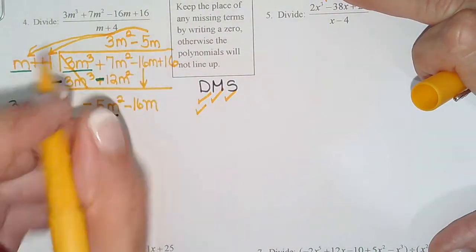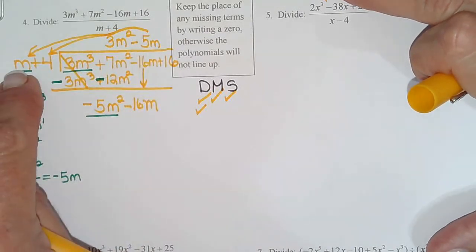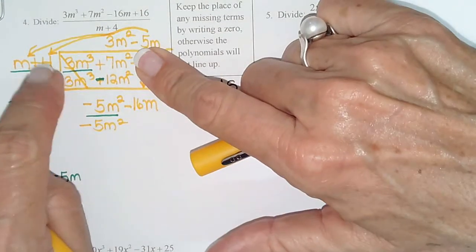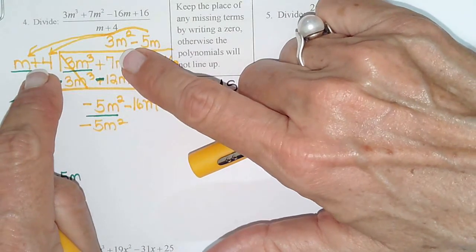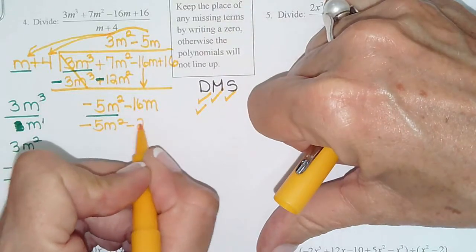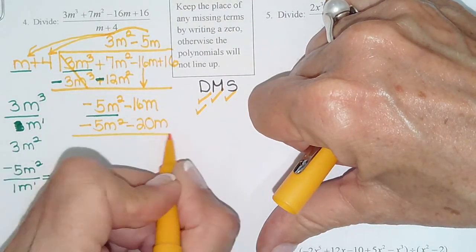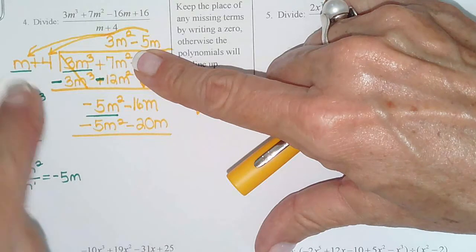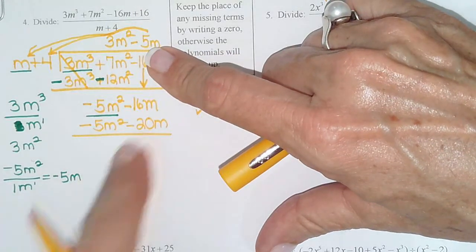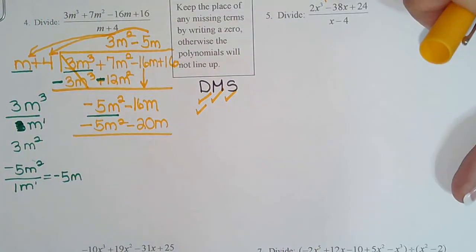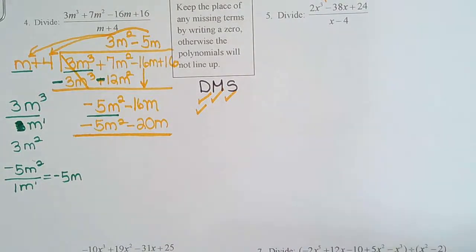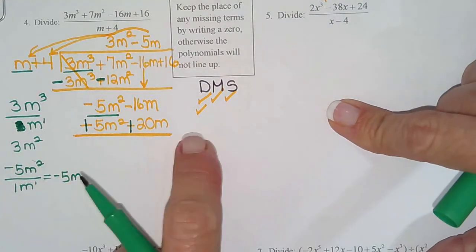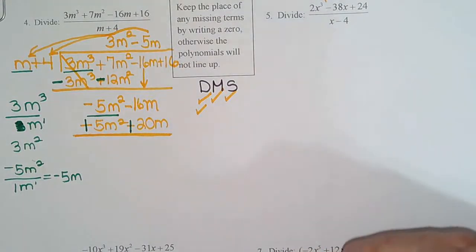Now we need to extend these over here. So it's negative 5m times m, which is negative 5m squared. And then it's negative 5m times 4, which is negative 20m. So we always distribute the new quotient to everything in front using its sign too. So negative 5m times m, negative 5m squared. Negative 5m times 4, negative 20m. Draw the line. Change the sign. See how they're both negative? So now they both need to become positive. So every sign in the bottom row gets changed. So draw the line. Change the sign.